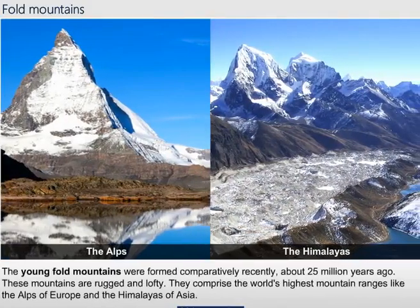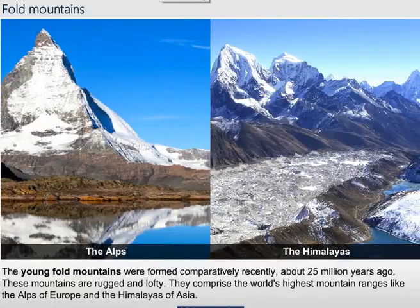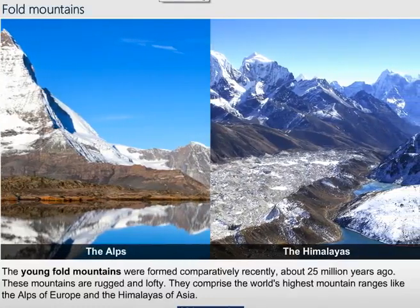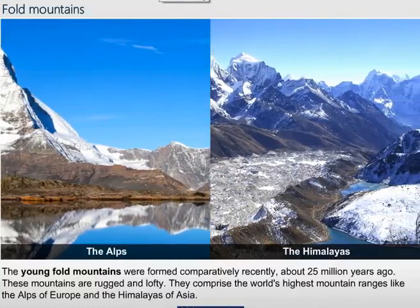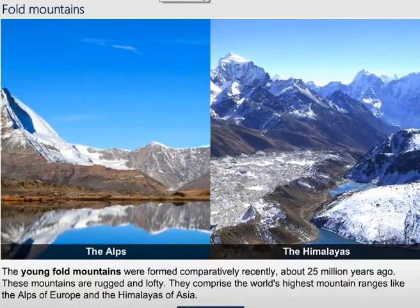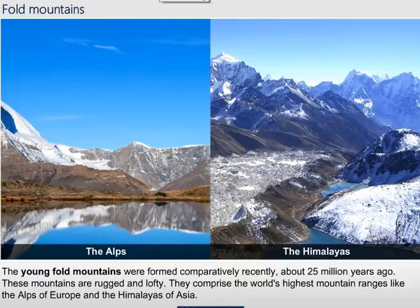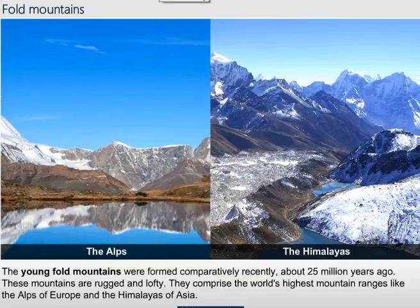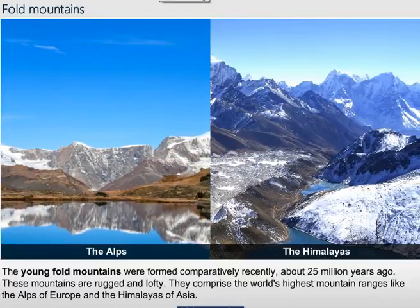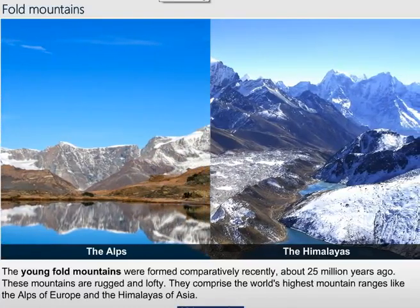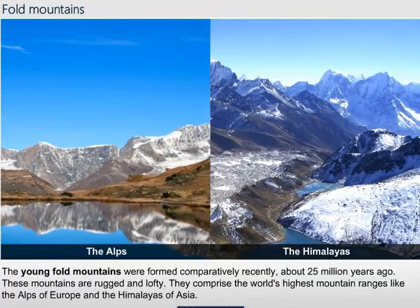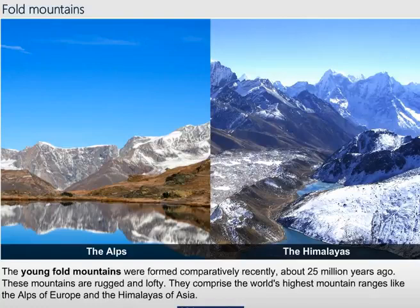The Young Fold Mountains were formed comparatively recently, about 25 million years ago. These mountains are rugged and lofty. They comprise the world's highest mountain ranges like the Alps of Europe and the Himalayas of Asia.